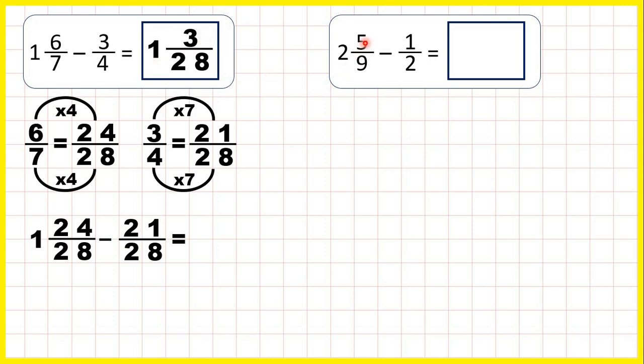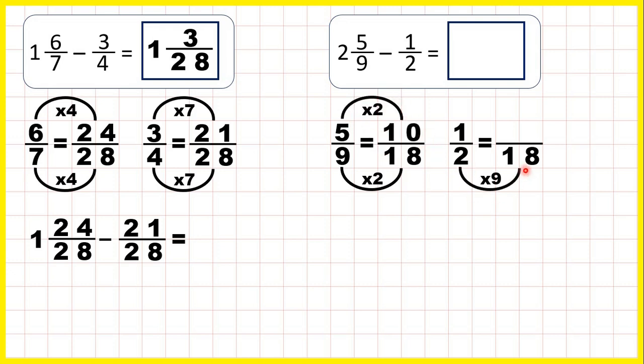Now 2 and 5 9ths minus 1 half. So we need to get our denominators the same. 18 is in both the 9 and the 2 times tables, so we can use 18 as our common denominator. 9 times 2 is 18, 5 times 2 is 10, 2 times 9 is 18, and 1 times 9 is 9.